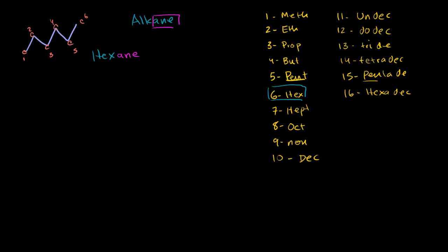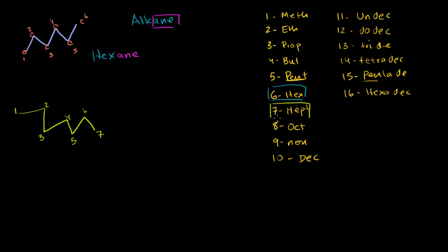Let's do another one. Let's say I have this structure here, but let's make it even longer. So how many carbons do we have? We have 1, 2, 3, 4, 5, 6, 7 carbons. They're all single bonds, so it's an alkane. With 7 carbons, this is heptane, because we have all single bonds.